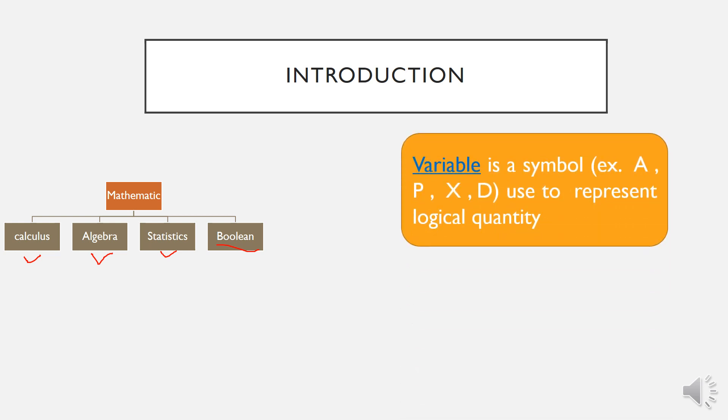Boolean algebra uses symbols that represent logical quantity known as variable. The variable can only take two possible values: zero and one. There are only two possible values. As for the symbols for variable, we can use any letters, preferably uppercase letters, to represent this variable.